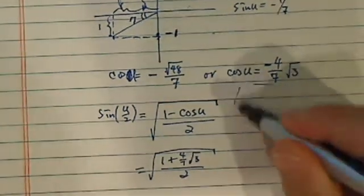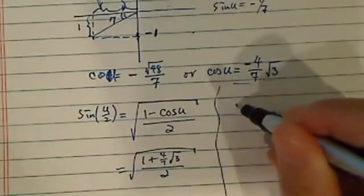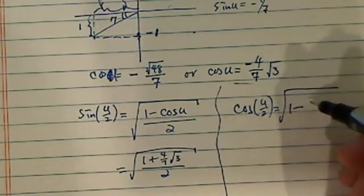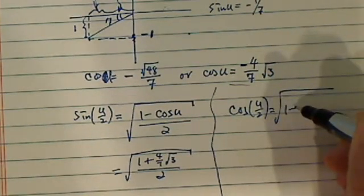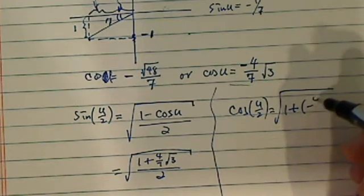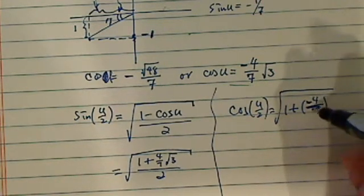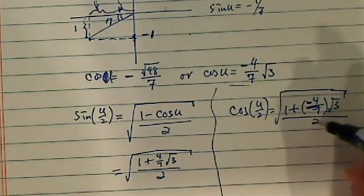Now for cosine of u over 2, we have 1 plus cosine u over 2. That's the square root of (1 plus 4 radical 3 over 7) divided by 2.